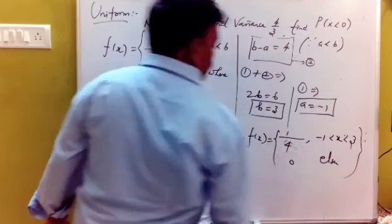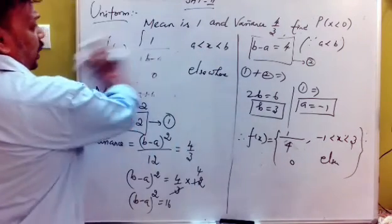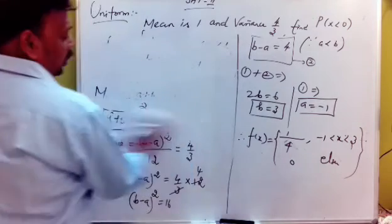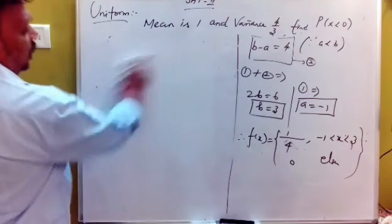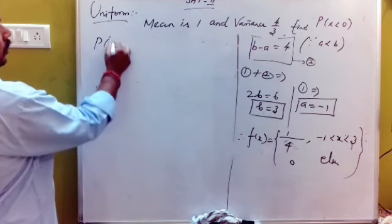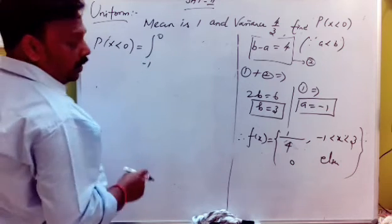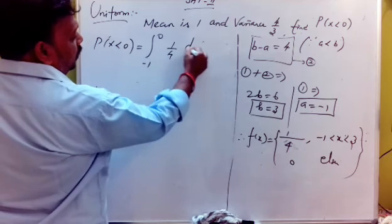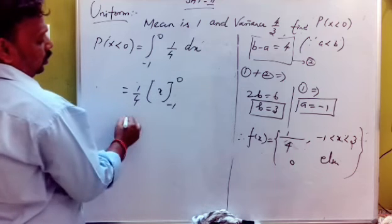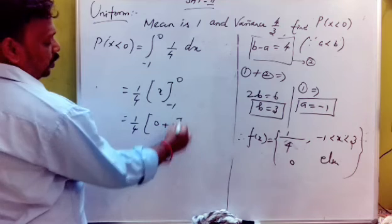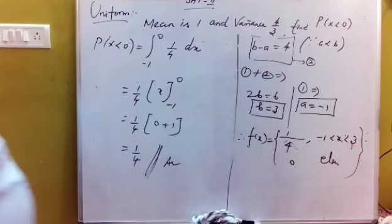Now find P(x < 0). We integrate f(x) from the lower limit −1 to 0. So P(x < 0) = integral from −1 to 0 of (1/4) dx.